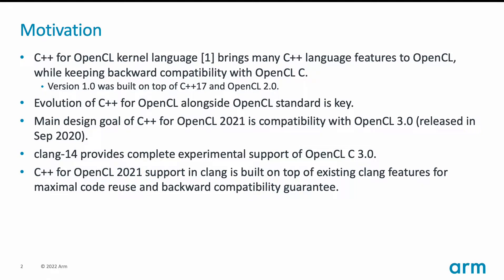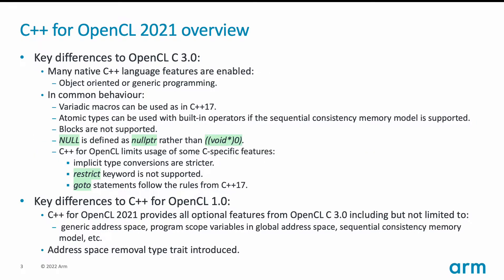Therefore, the main design objective of C++ for OpenCL 2021 version was, first of all, to provide evolution of the C++ kernel language alongside the OpenCL standard, and also to leverage the existing implementation in Clang.